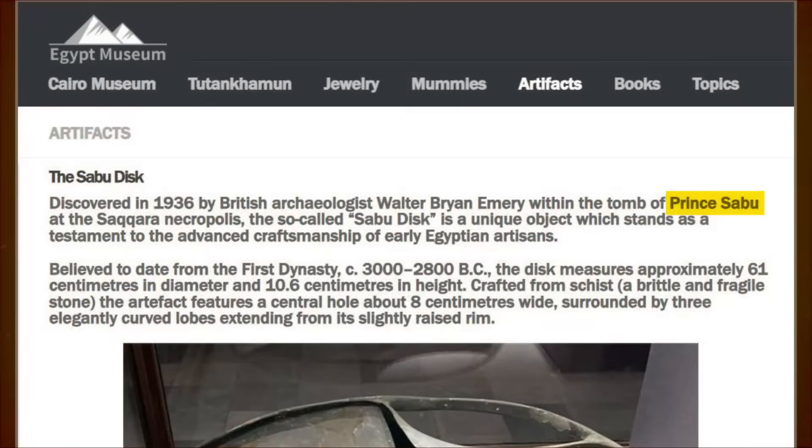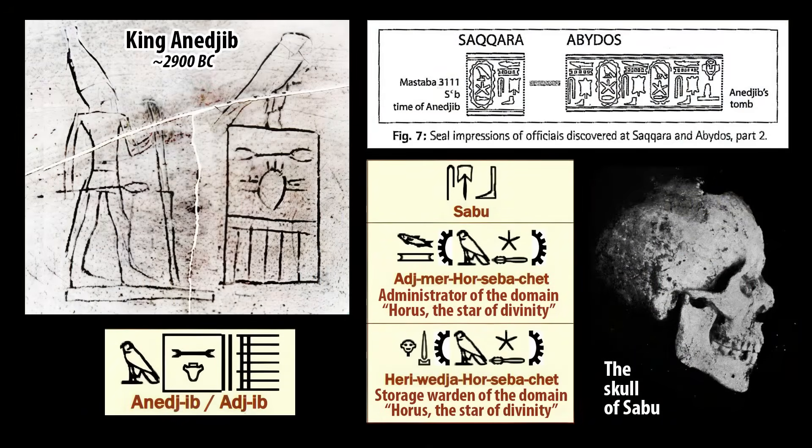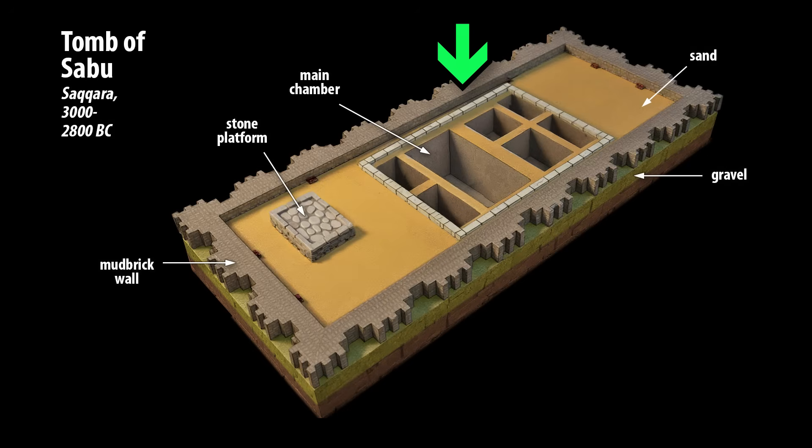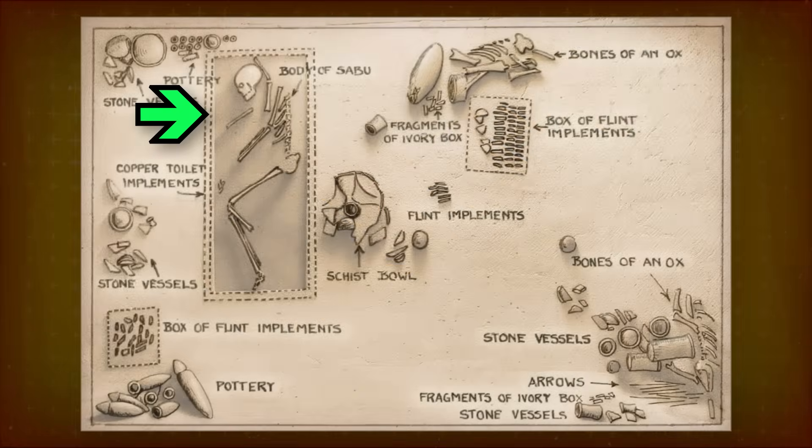The tomb's owner is often named as Prince Sabu, but we don't know if Sabu was actually related to the Pharaoh. The seals just tell us that Sabu was acquainted with the Pharaoh. The tomb architecture follows the early elite pattern. A large rock-cut pit was partitioned by mud-brick walls into the main burial chamber and six other storage rooms. In the burial chamber, Sabu's skeleton lay on its right side, some distance from the center.